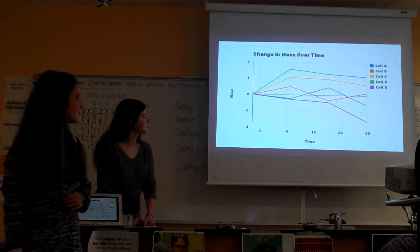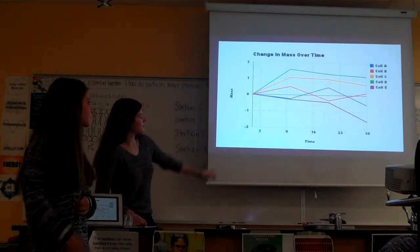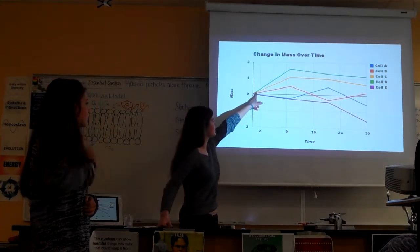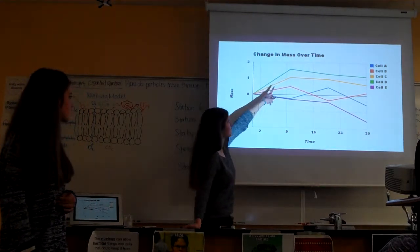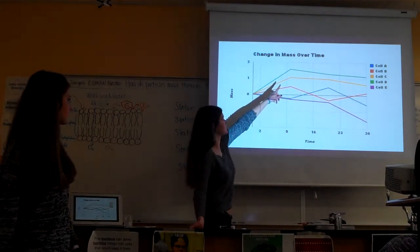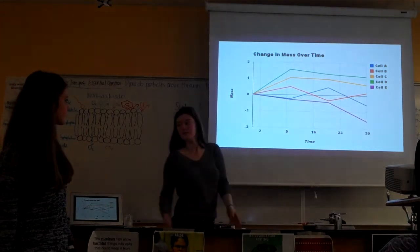For example, you can see up here, this is 80% glucose, the green one. And then this one is 50%, so you can see how it's going down faster for the beaker solutions.